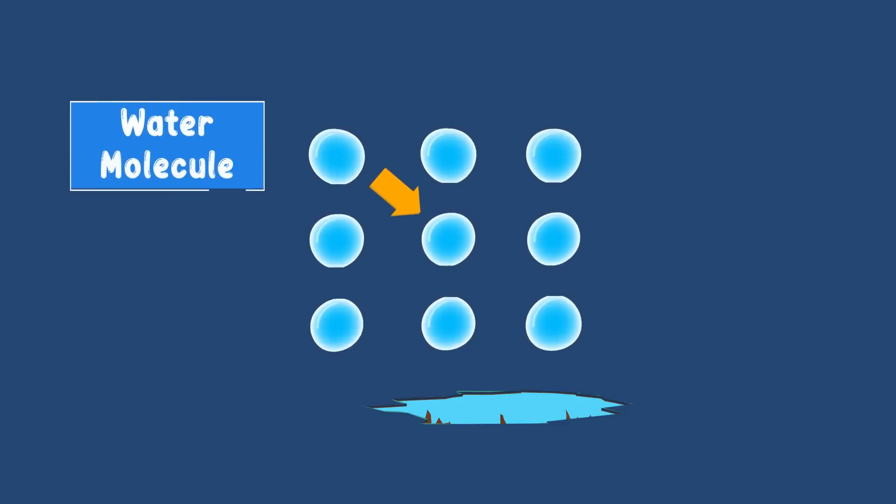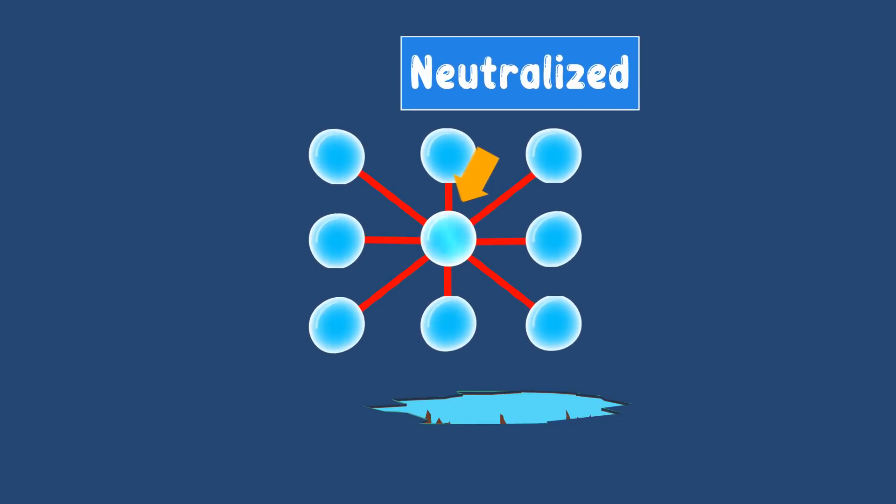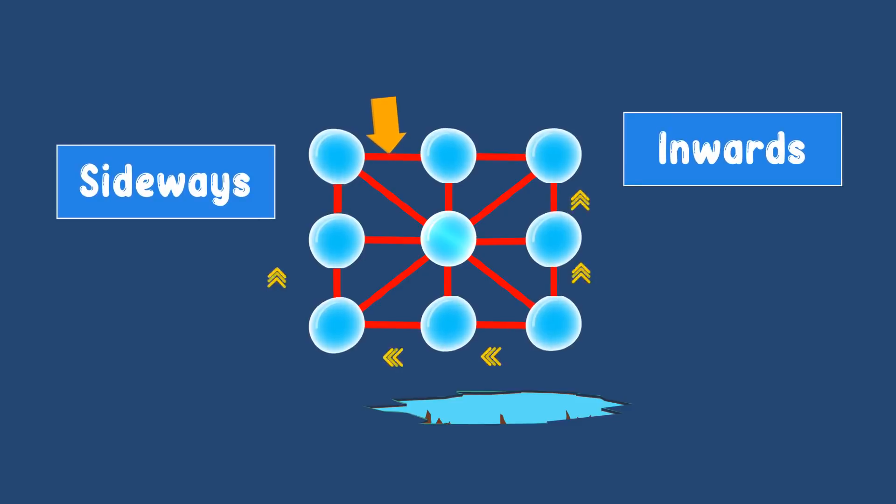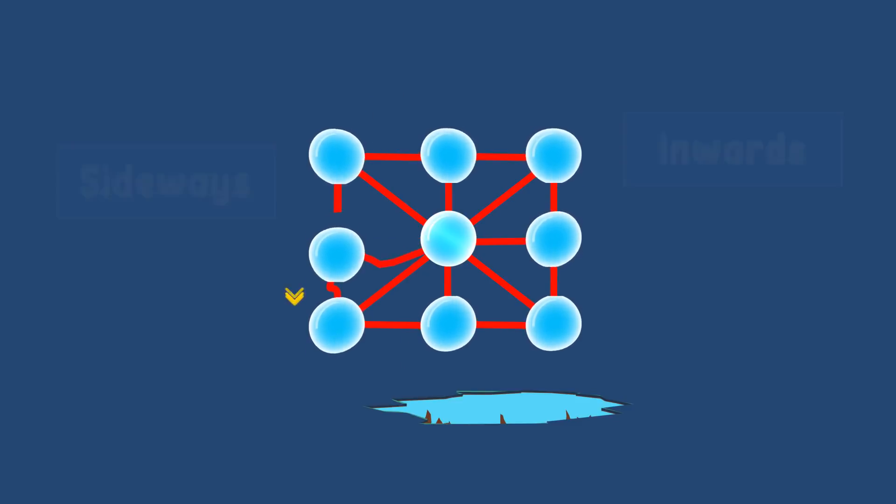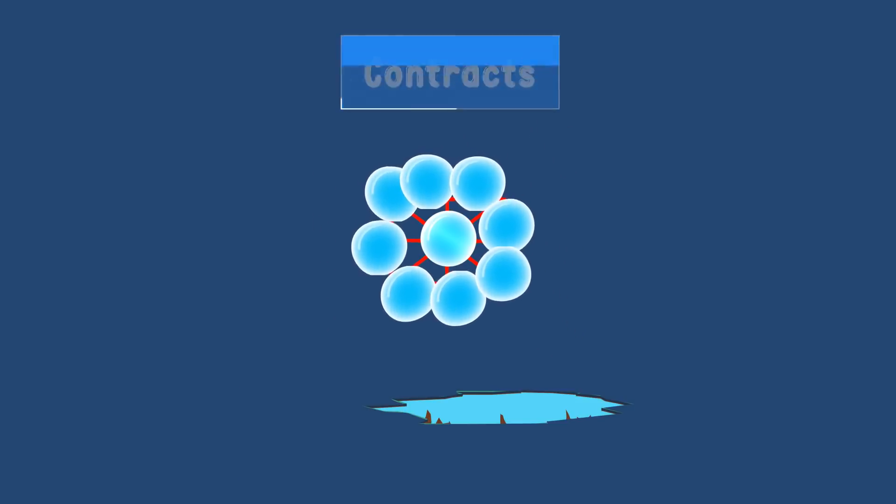Inside a drop, each water molecule is pulled with a force by its neighboring molecules. As these forces are equal and opposite, they get neutralized. However, the molecule present at the surface is not attracted outwards. It is attracted only inwards and sideways. Sideways forces get neutralized, but because of the inward force, each surface molecule contracts to form a shape that has minimum surface area, which is a sphere.